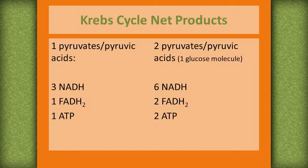For each round of the Krebs cycle, one pyruvate or pyruvic acid, later forming acetyl-CoA, produces three NADHs, one FADH2, and one ATP molecule.